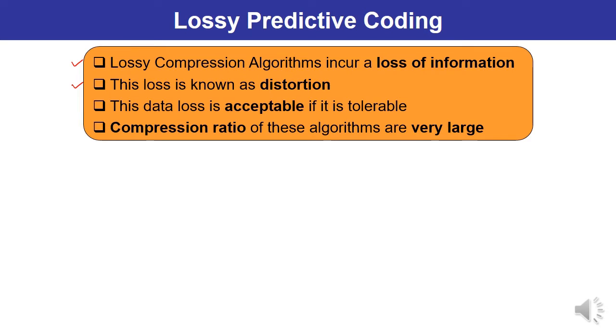Here the data which is lost during the image compression, if that particular data is acceptable, means if it is tolerable, that is not going to impact the overall quality. Some of the information may be lost, but overall quality may not be deteriorated, can be accepted and can be utilized in certain applications.